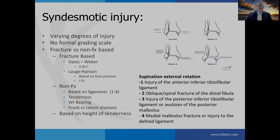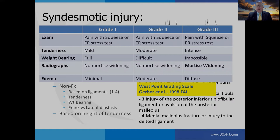Syndesmotic injury is generally graded based on fracture and non-fracture injury. For fracture cases, the Dennis Weber and Lauge-Hansen classification systems are used. For non-fracture injury, there are a couple of purported scales — the West Point receives some publicity — but there's no real consensus. Grading mild, moderate, or severe tenderness along with weight-bearing status and whether there's frank or latent diastasis is somewhat arbitrary, and we don't have a real good grading scale for syndesmotic injury.